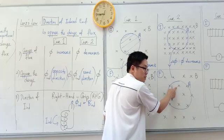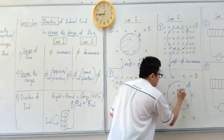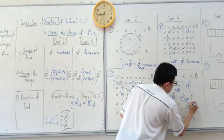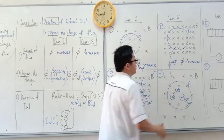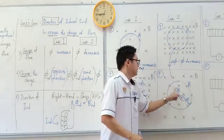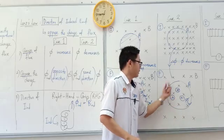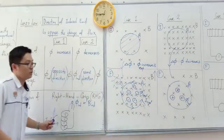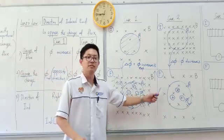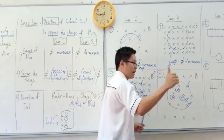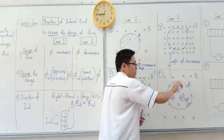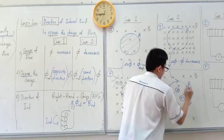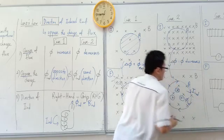The initial flux is going into the plane, so the induced flux will be into the plane also. This is the induced flux — into the plane. When the flux decreases, this induced flux tries to increase it back. Then we use our right-hand grip rule to find the induced current. Since the thumb is going into the page, your fingers curl clockwise. So this is the induced current in the clockwise direction.